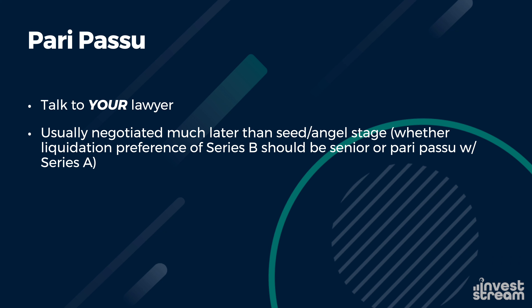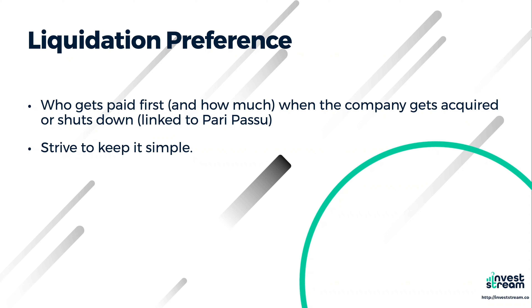Understanding pari passu helps you know where you fall on the capital stack and who gets paid out first versus last. Usually it's not a terrible problem, but in some cases — for example, pre-IPO companies raising a round — the last investor may put in a large chunk of money and demand the right to exit first when the company goes public. Pari passu is very closely linked to liquidation preference, which determines who gets paid first and how much when the company is acquired, shuts down, or IPOs.